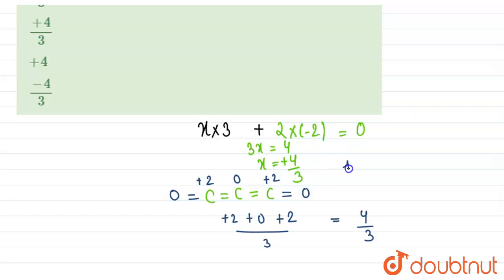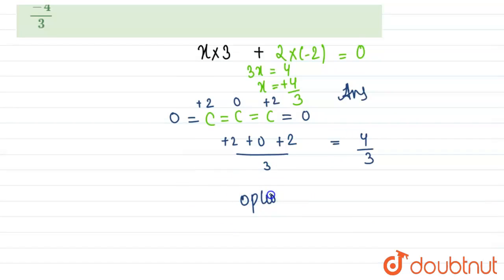That is the oxidation state of carbon and it is in option number B. So our answer for the given question, the oxidation of carbon is 4 by 3 which is in option number B.